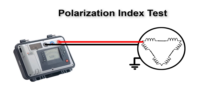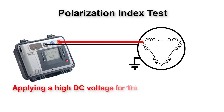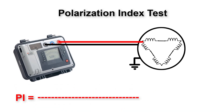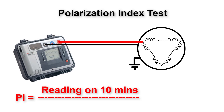The PI test applies the mega test on a motor between its windings and the motor body, but not for just a few seconds. We apply a high DC voltage for 10 minutes and record the readings at one minute and then at 10 minutes. Dividing the reading at 10 minutes by the reading at one minute gives the PI ratio, or polarization index ratio.